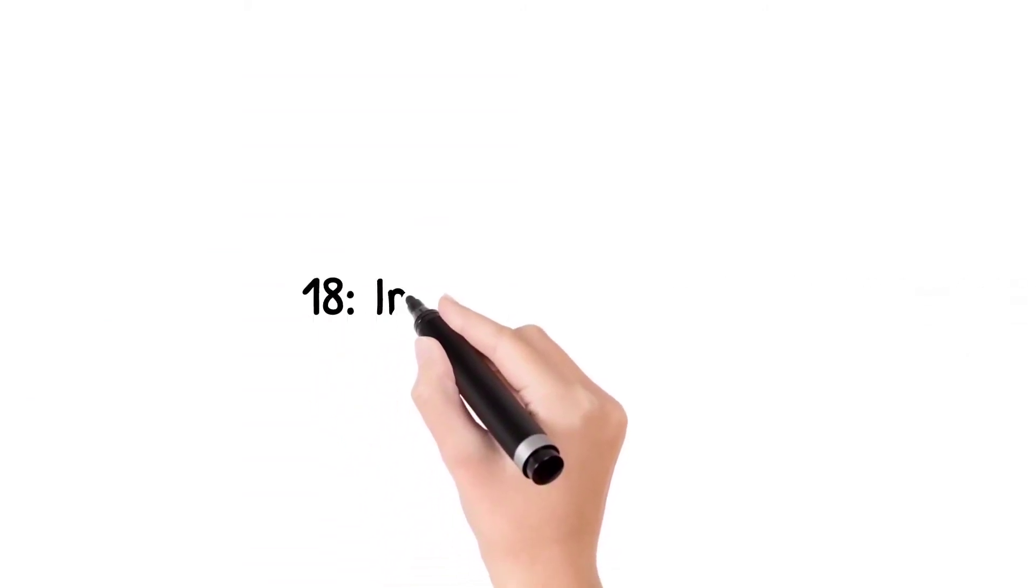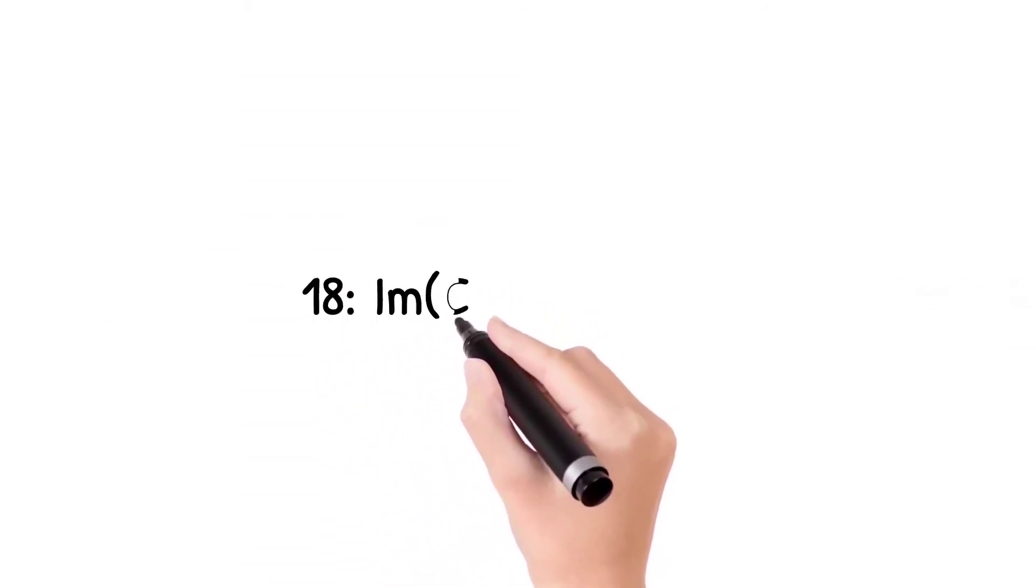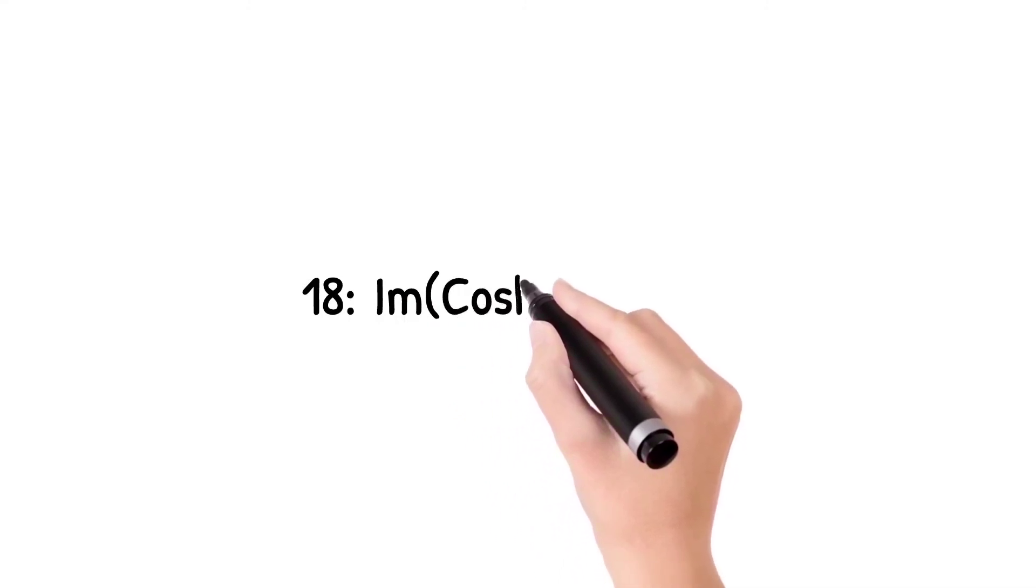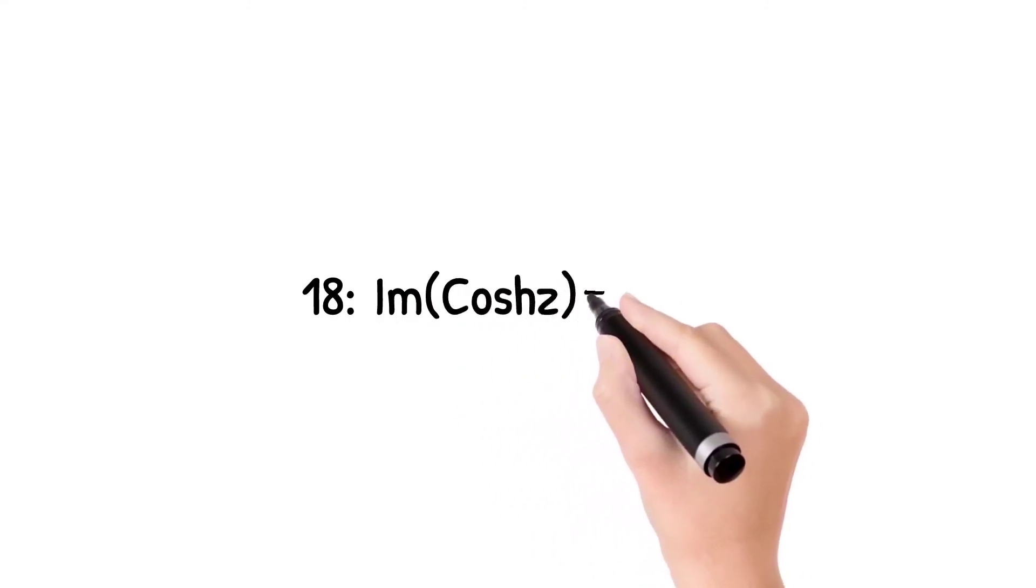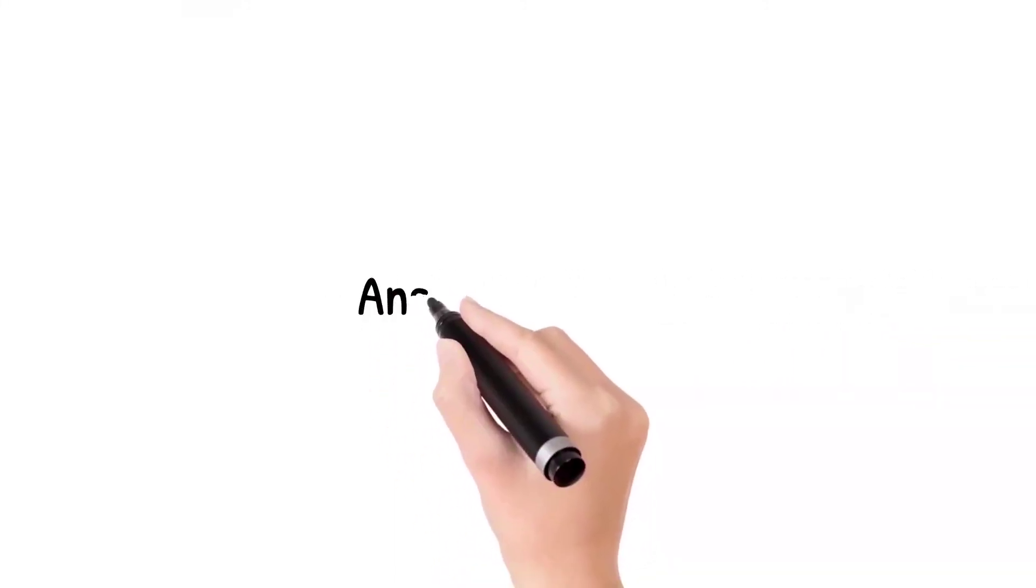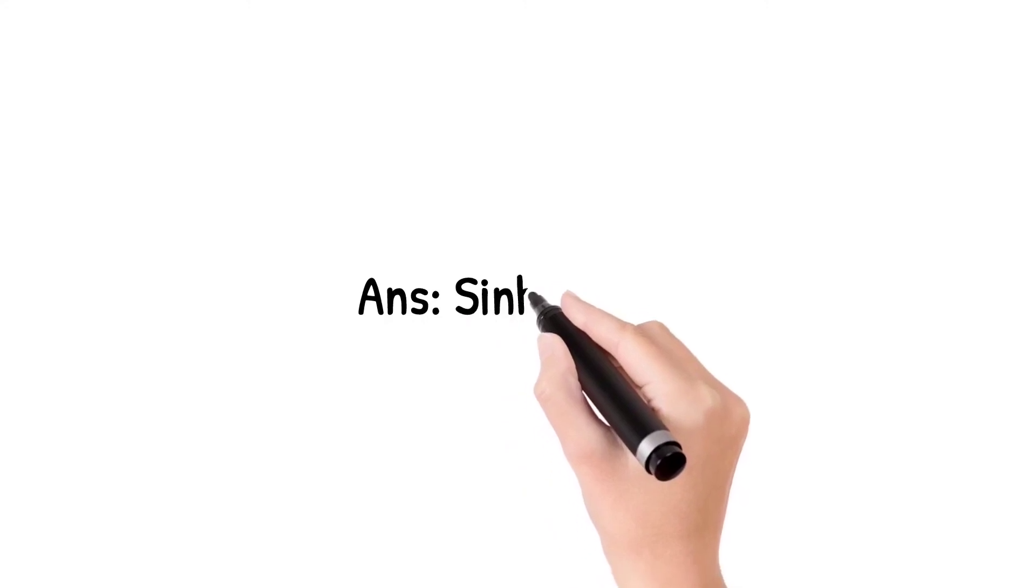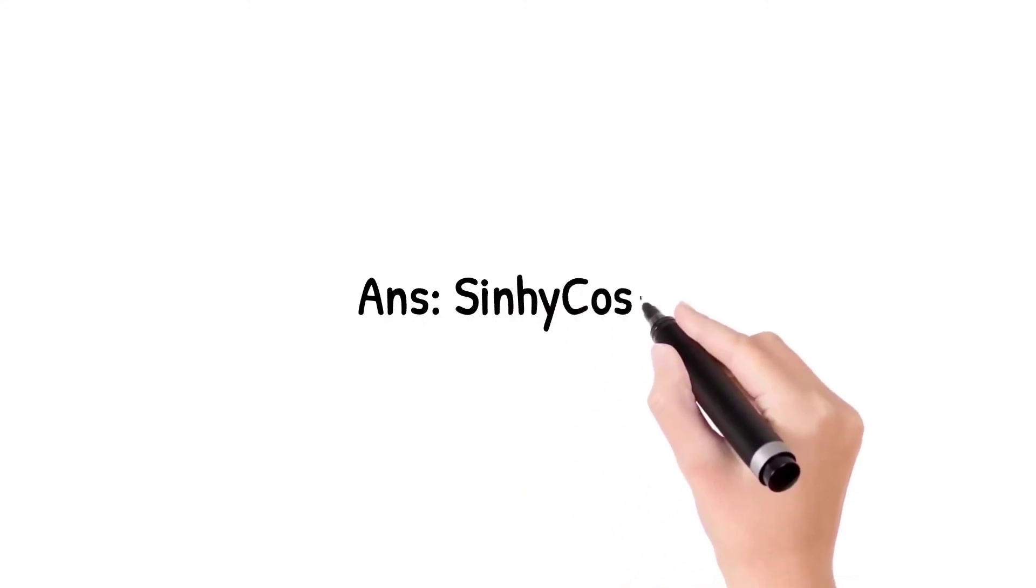Question number 18: Imaginary part of cos hyperbolic z equals? Answer is sin hyperbolic z cos hyperbolic y.